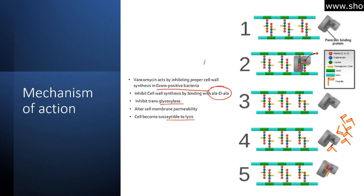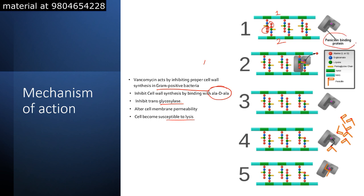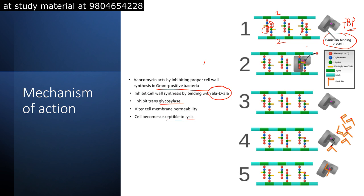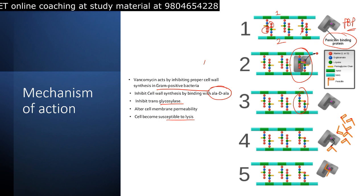Looking at the peptidoglycan structure, there are different sequences with cross-linking events. One segment and a second segment of the peptidoglycan layer are shown. The red, blue, and green beads represent different amino acids — alanine is the red color, and the two red beads represent D-alanine. The green represents NAM and the blue represents NAG. The NAM structures have polypeptide chains associated to them. A transpeptidation reaction is catalyzed by the penicillin binding protein, or PBP — also known as transpeptidase — which cross-links the NAM sequences. This cross-linking is very important to maintain membrane and cell wall integrity.